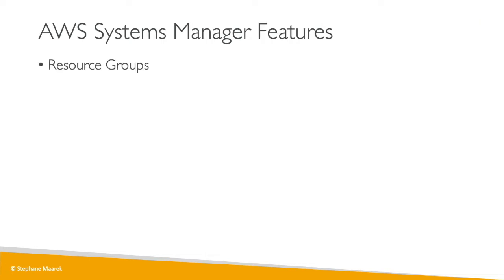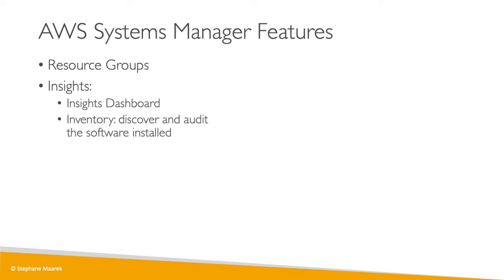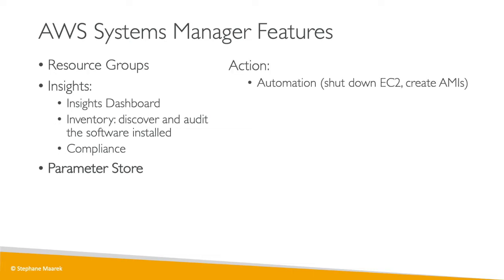The features are many: resource groups, insights dashboard, inventory, compliance, and the Parameter Store which we'll see in this section. There are also actions such as Automation — for example, automating shutting down EC2 instances or creating AMIs. You can run commands directly from Systems Manager onto all of your instances, which we'll see as well.